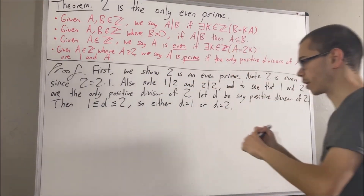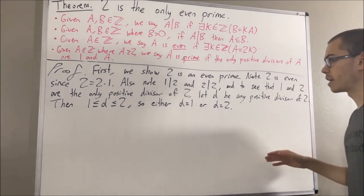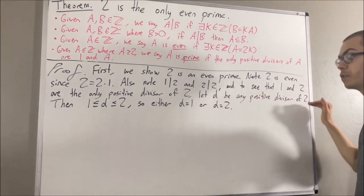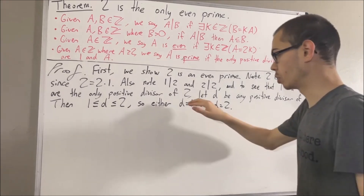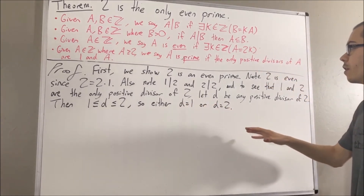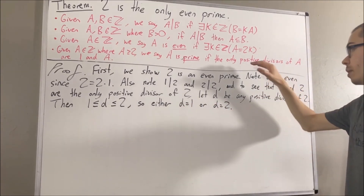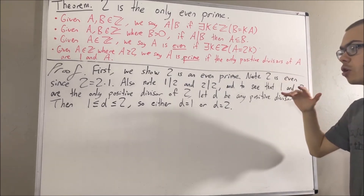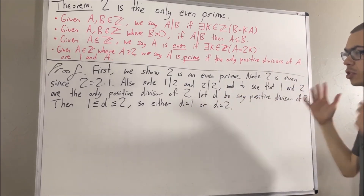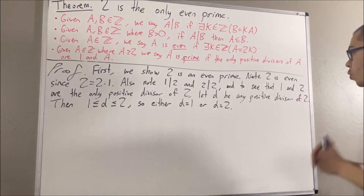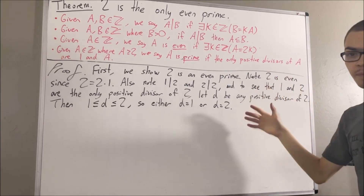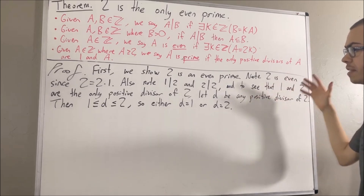So what we've shown here is: if d is any positive divisor of 2, then d must be equal to either 1 or 2. So the only positive divisors of 2 are 1 and 2, which tells us that 2 is prime. We've shown that 2 is even, and we've shown that 2 is prime. So 2 is an even prime.